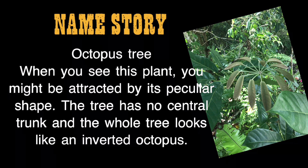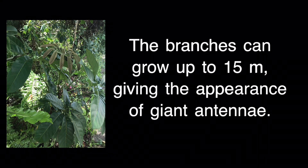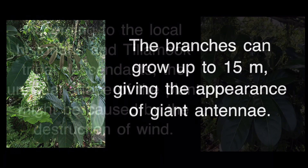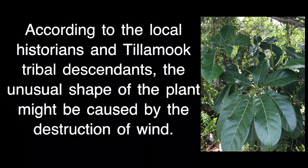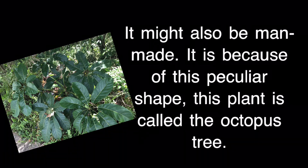Name story — Octopus Tree: When you see this plant you might be attracted by its peculiar shape. The tree has no central trunk and the whole tree looks like an inverted octopus. The branches can grow up to 15 meters, giving the appearance of giant antennae. According to local historians and Tillamook tribal descendants, the unusual shape might be caused by the destruction of wind, or it might also be man-made. It is because of this peculiar shape that this plant is called the Octopus Tree.